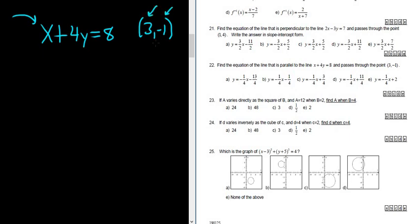So to find the equation of any line, we need two things: a point and a slope. We've already got the point. We just need the slope. So we're told that our line is parallel to this line. That means the slope of our line is the same as the slope of this line.